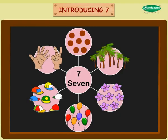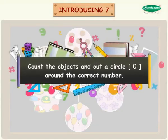Count the objects and draw a circle O around the correct number.